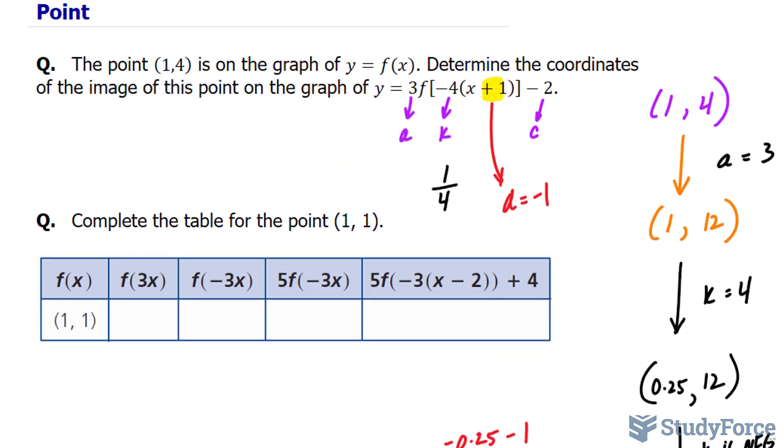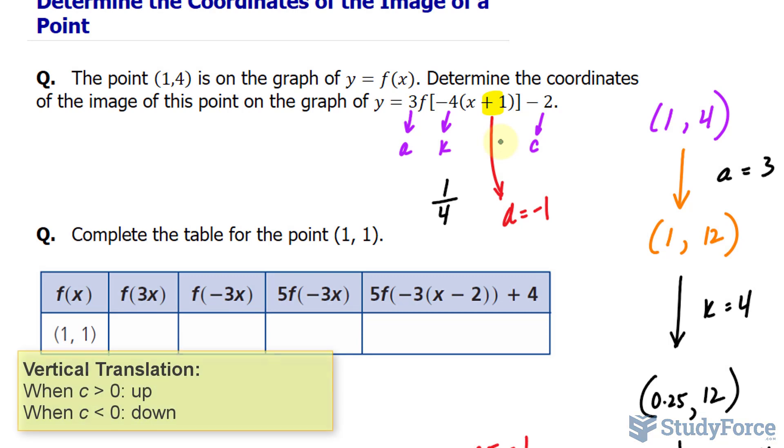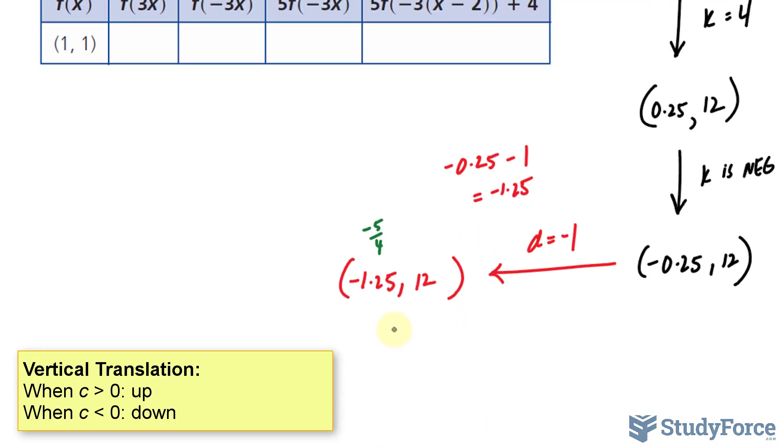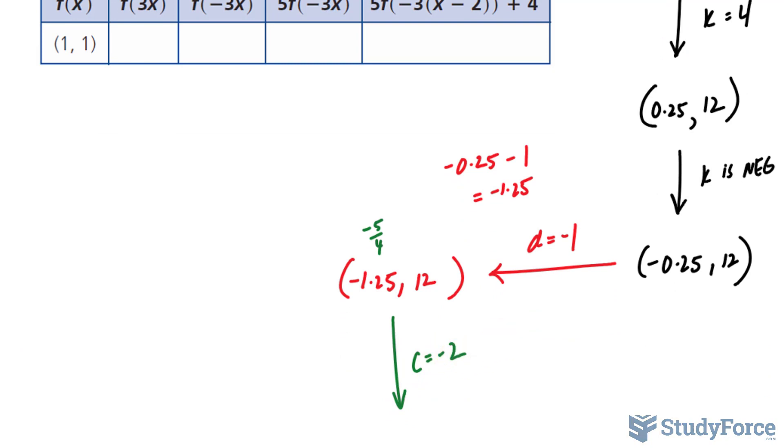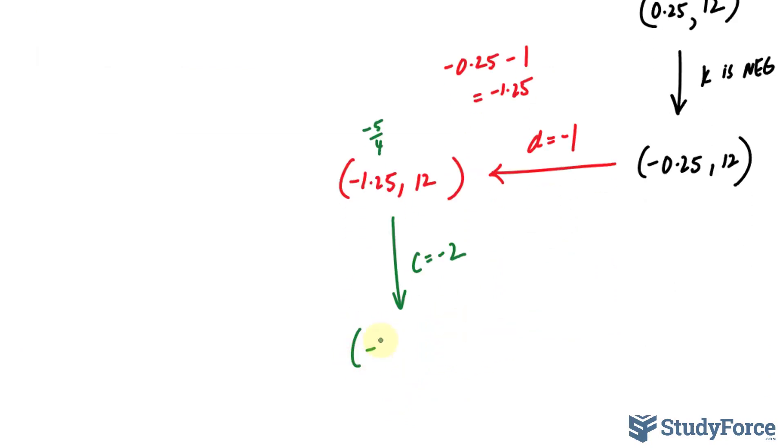And lastly, if we are applying a c value, which is a vertical translation up or down—in this case c is negative 2—so we will be subtracting 2 from the y coordinate. Applying a c value that is negative 2 means that our point will be at negative 1.25 and 10.